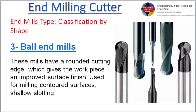3. Ball end mills: These mills have a rounded cutting edge, which gives the workpiece an improved surface finish. Used for milling contoured surfaces and shallow slotting.